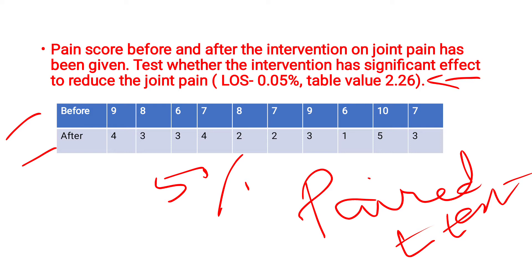In the question, they will not explicitly state whether it is paired or unpaired T-test. By reading the statement and seeing the clues given, you have to identify it yourself. The clue here is 'before and after the intervention.' Sometimes they give pre-test and post-test scores — for the same group, for only one group, you are comparing the pre-test and post-test values or before and after intervention values.